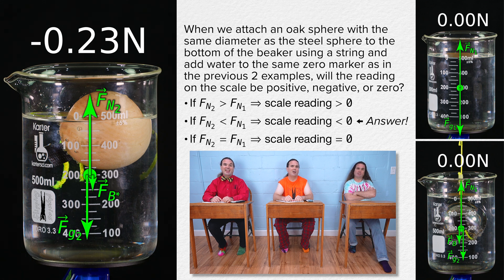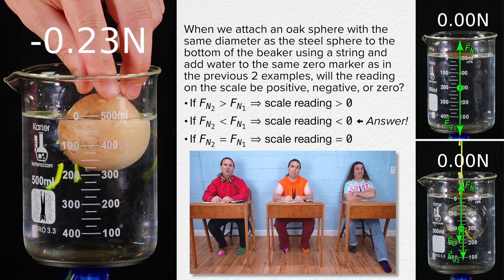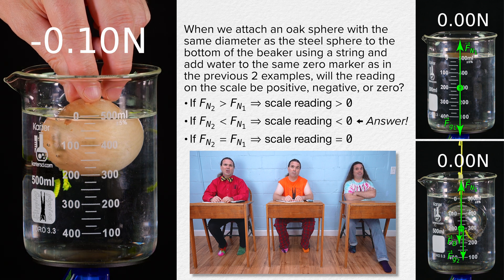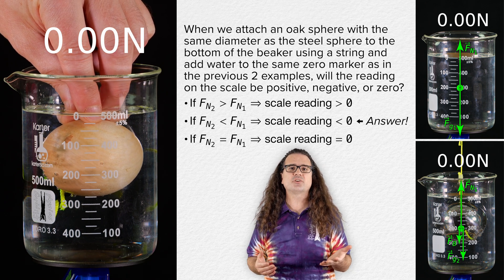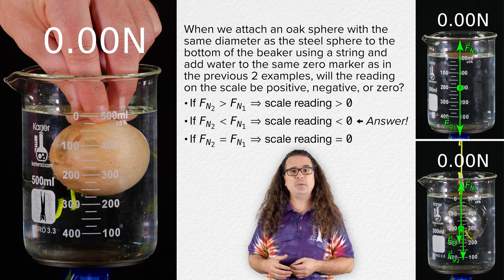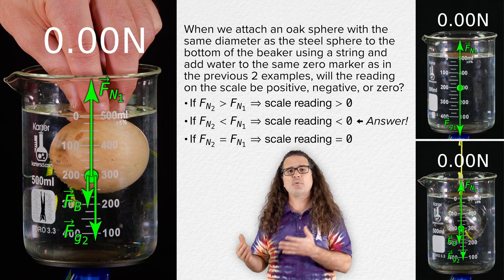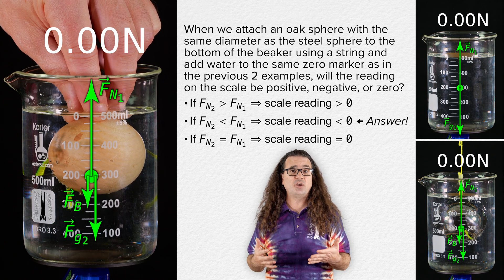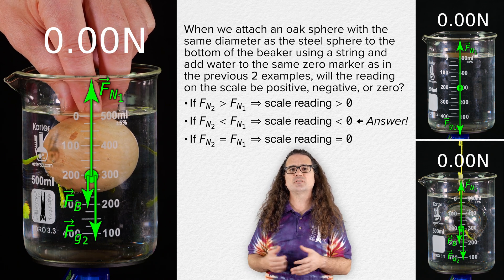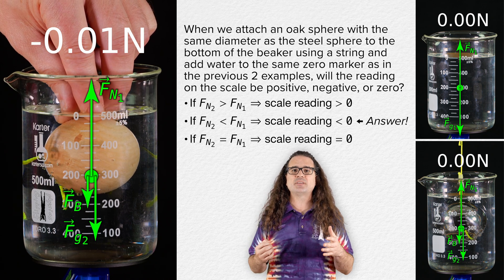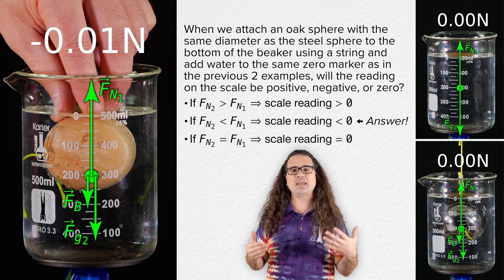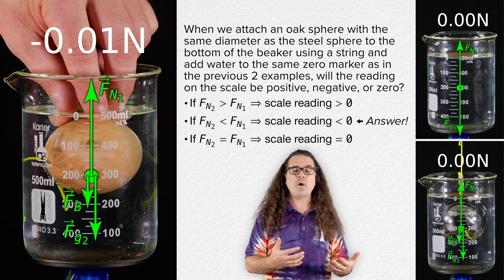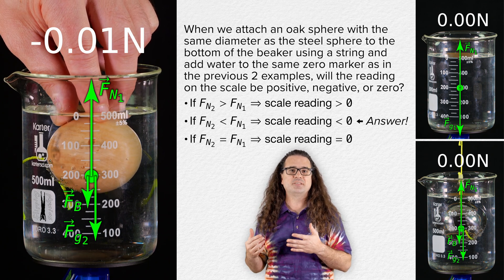What would happen if Mr. P were to push down on the oak sphere just barely submerging it in the water? When I push down on the oak sphere, the scale returns to zero because the free body diagram of the forces acting on the beaker and water is the same as when the steel sphere was submerged in the water. The oak sphere is again submerged in the water just like the steel sphere, making the buoyant force the same — because the steel sphere and the oak sphere have the same volume and displace the same weight in water and therefore have the same buoyant force.